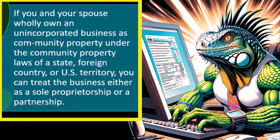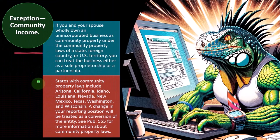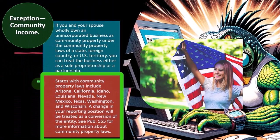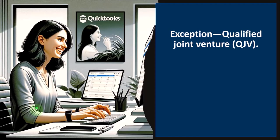You can treat the business either as a sole proprietorship or a partnership. States with community property laws include: Arizona, California, Idaho, Louisiana, Nevada, New Mexico, Texas, Washington, and Wisconsin. A change in your reporting position will be treated as a conversion of the entity. See Publication 555 for more information about community property laws.